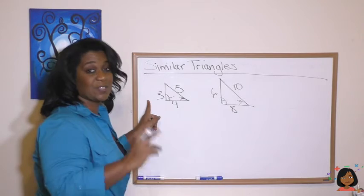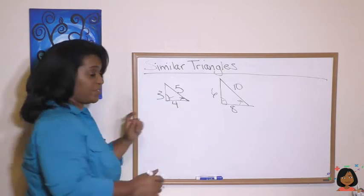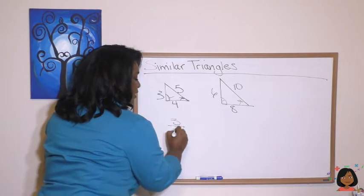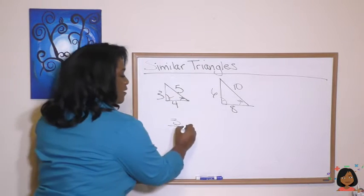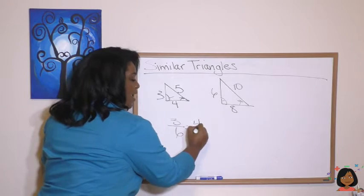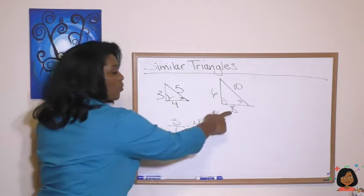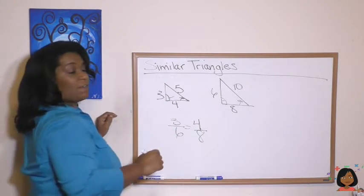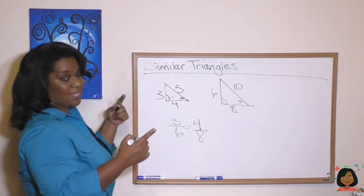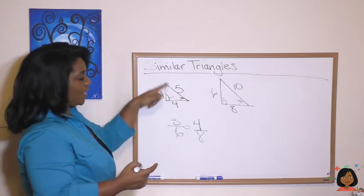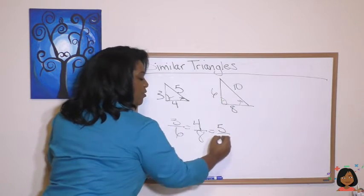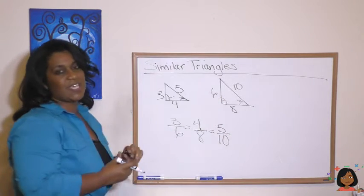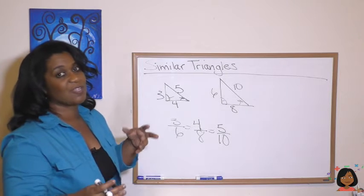This 3 has a corresponding side with this 6. So let's write 3 is to 6 as, let's try this side. This 4 has a corresponding side with this 8. 4 is to 8. Let's keep going. This side of the triangle has a corresponding side with the 10.